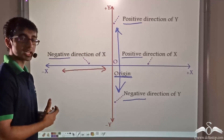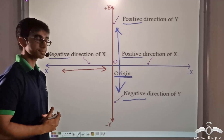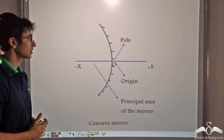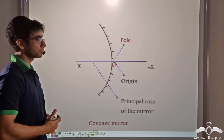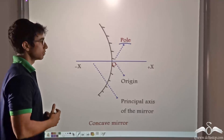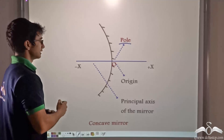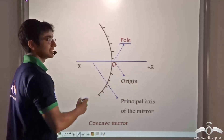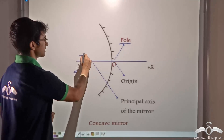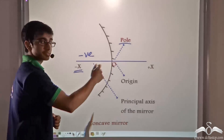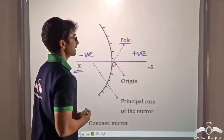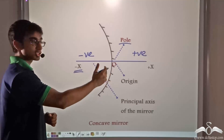So how can we translate the Cartesian coordinate system in the case of spherical mirrors? In the case of a concave mirror, the pole of the concave mirror is considered as the origin. Points to the left — that is, points on the principal axis (taken as the x-axis) — are considered as negative, and points to the right of the origin are considered as positive.